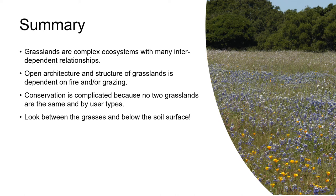This has been just a very short introduction to the animal life of grasslands. The take-home points are that grasslands are complex ecosystems with interdependent relationships between the plant life and animal life. Also really important is the open architecture of grasslands, which relies on fire or grazing or a combination of both to maintain it. Conservation of these ecosystems is also complex because no two grasslands are identical, so different management regimes are required. Conservation is further complicated by the pressure to keep open spaces open to as many user types as possible, and some of these uses may just not be compatible with conservation.